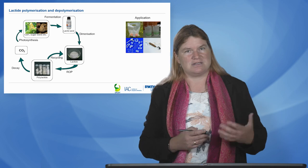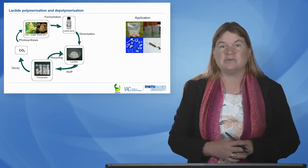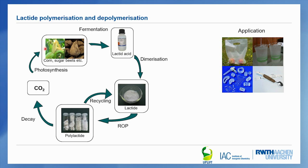As a glimpse of what we are dealing with here: we can start with bio feedstocks, for example corn, sugarcane, sugarbeets depending on the region, or also second generation feedstocks like straw or residues from food processing. After fermentation you obtain lactic acid, after dimerization you obtain the lactide, and in the ring-opening polymerization you come then to the polylactide. This is where the inorganic chemist as catalyst developer comes into play.